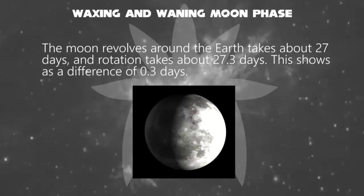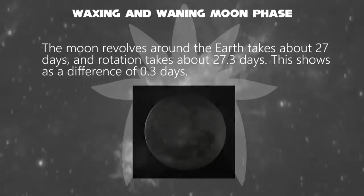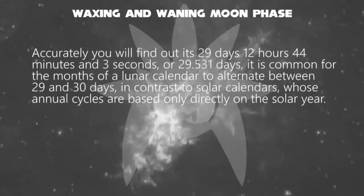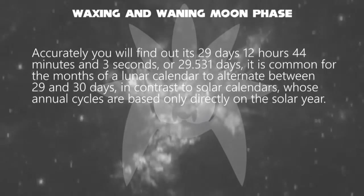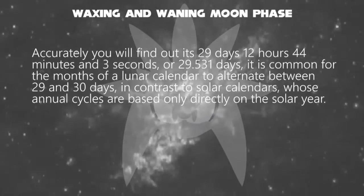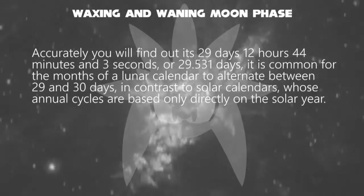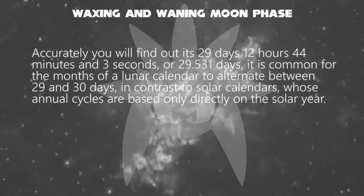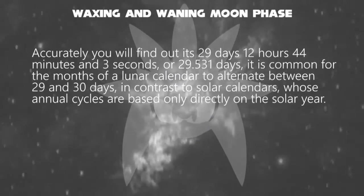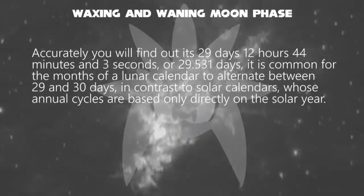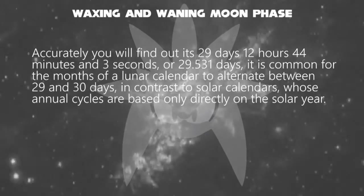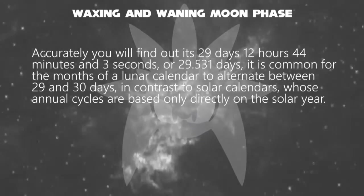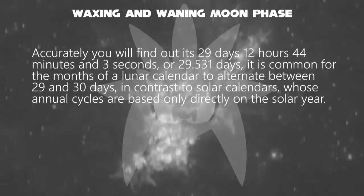We can find in the lunar calendar that the phases change in one cycle taking about 29.5 days. Accurately, it is 29 days, 12 hours, 44 minutes, and 3 seconds, or 29.531 days. It is common for the months of a lunar calendar to alternate between 29 and 30 days, in contrast to solar calendars whose annual cycles are based directly on the solar year.